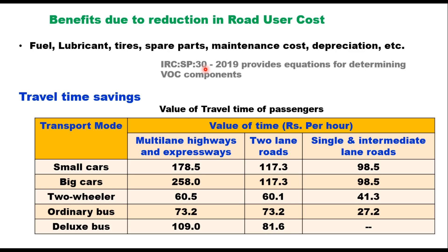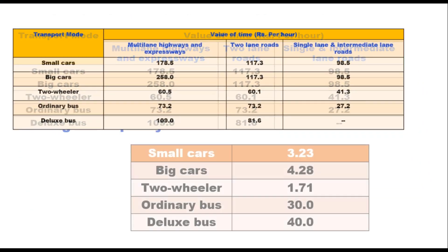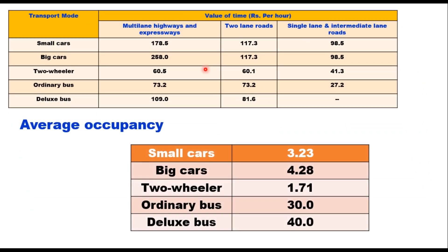When considering travel time saving in the economic analysis, the average occupancy of a big car is taken as 4.28, small car 3.23, two-wheeler 1.71, ordinary bus 30, and deluxe bus 40.